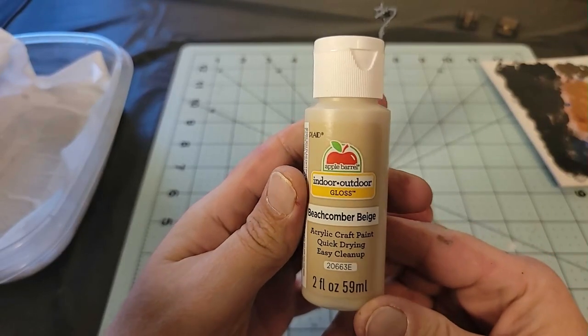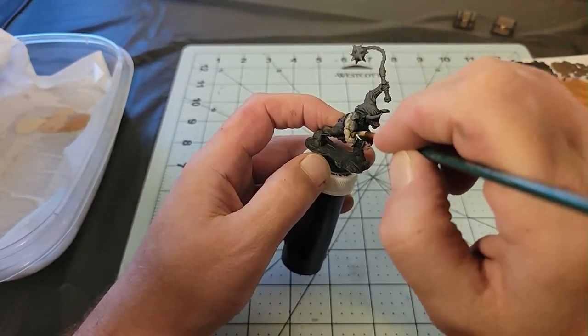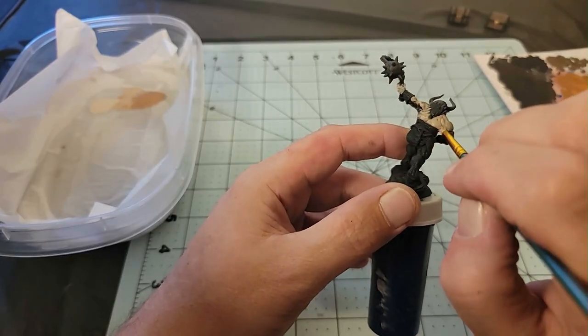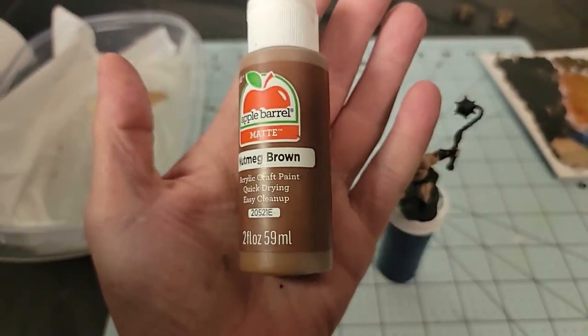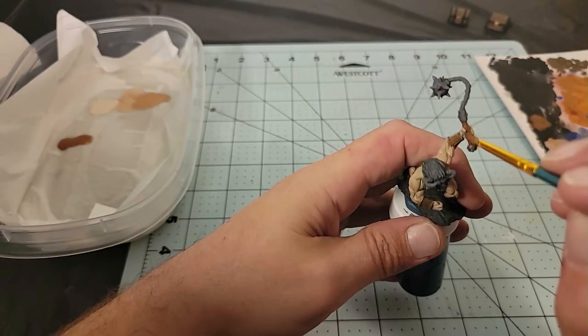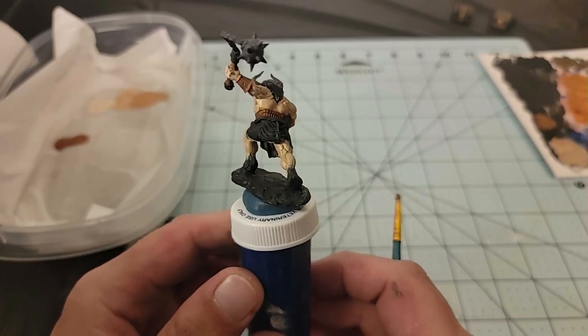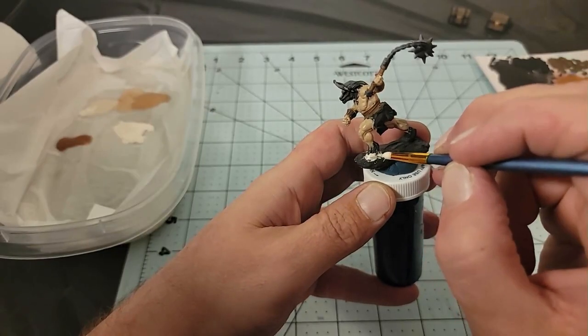For the minotaur, I mixed Beachcomber Beige and Territorial Beige to give his skin a tannish-white color because I wanted him to actually look half-human. Then I used Nutmeg Brown for his bracers, his belt, and the handle of his mace. Next, I used an antique parchment color for his horns and his hooves.